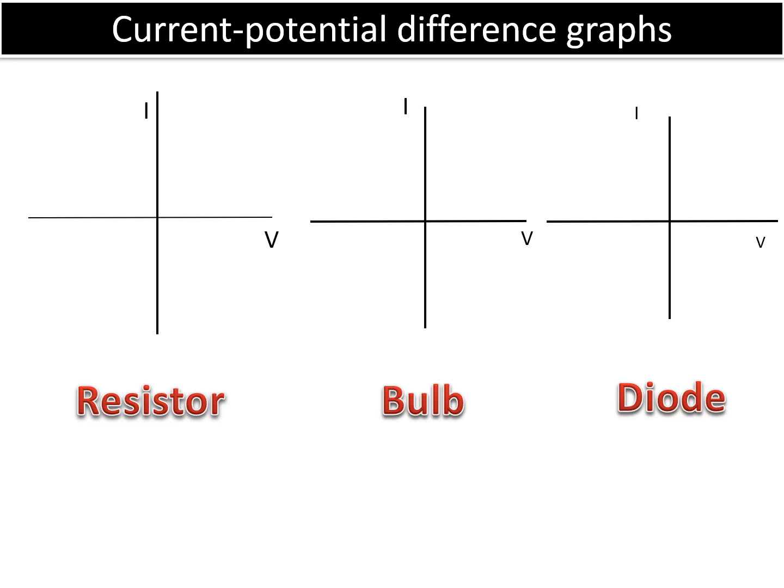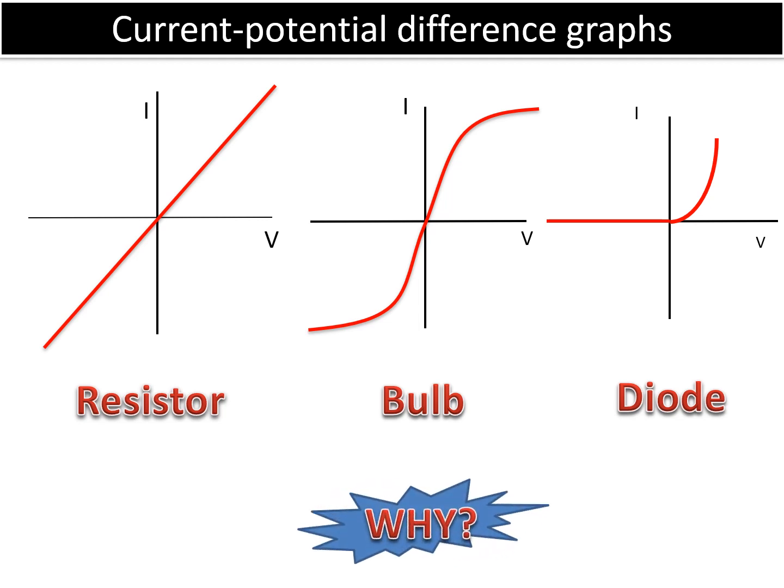I-V graphs can be kind of tricky and you need to be able to recognize the I-V graphs for these three components and explain why they look like they do. So first of all a resistor - the shape for this is a straight line. For a bulb we've got this weird kind of S-shaped curve, and then for a diode we have a rather unusual looking graph - it's not symmetrical on any axis like the other ones. You need to be able to explain exactly why these graphs look like they do.